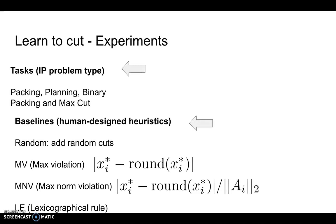We also compare our learned heuristic with other human-designed heuristics. Random, which is not a very typical baseline for integer programming literature, but is a very typical baseline for reinforcement learning. Maximum violation, max norm violation, as well as lexicographical rule.